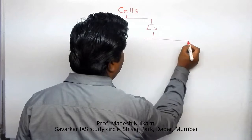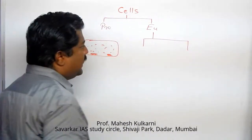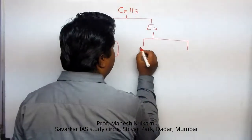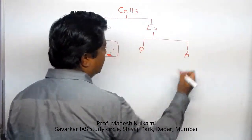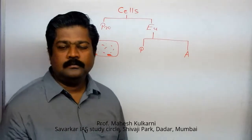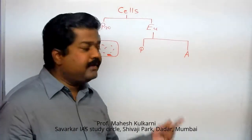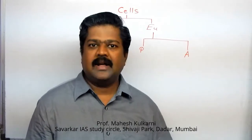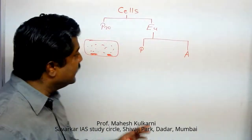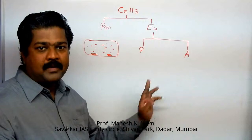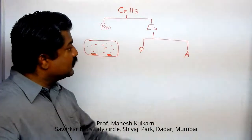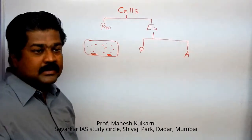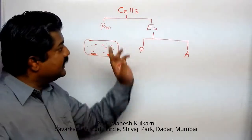Now eukaryotic cells — I should divide into various categories, but here I am dividing only into two categories. First, they are called plant cell and animal cell. Again, in every category we have somatic cells and gamete cells, but right now we are focusing on a primitive type of classification. So here we are talking of plant cell and animal cell.